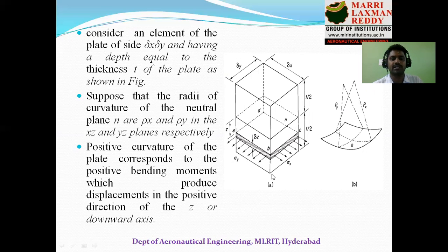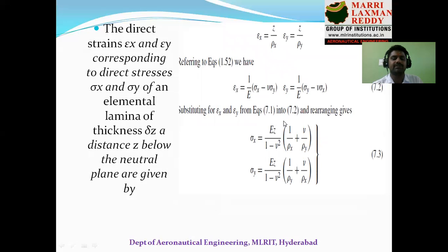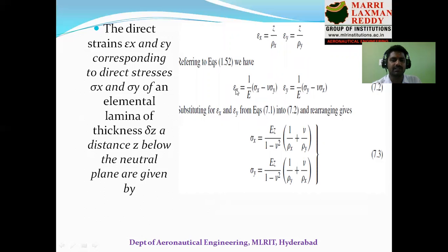Positive curvatures due to positive bending moments produce positive displacements in the z direction. Since bending moments are applied, we write the strains in the x and y directions: εx = z/ρx and εy = z/ρy. From mechanics of solids, the stress-strain relationships are: εx = (1/E)(σx − ν·σy) and εy = (1/E)(σy − ν·σx).